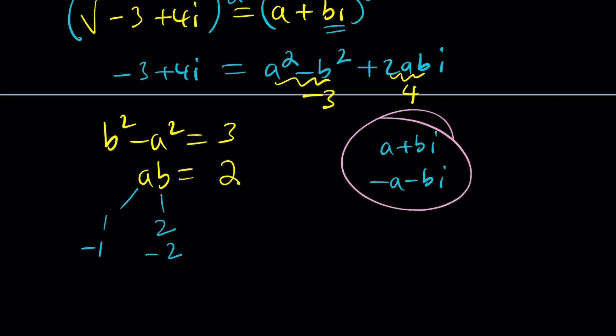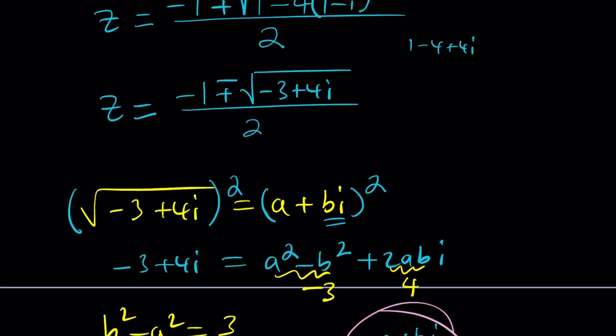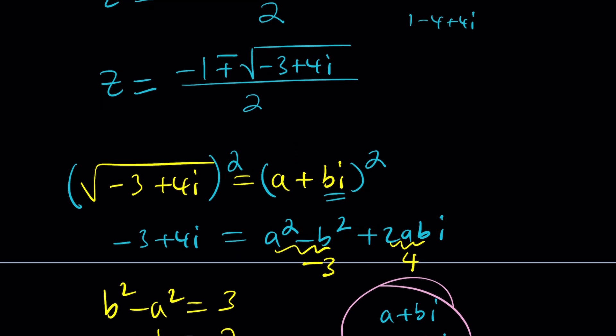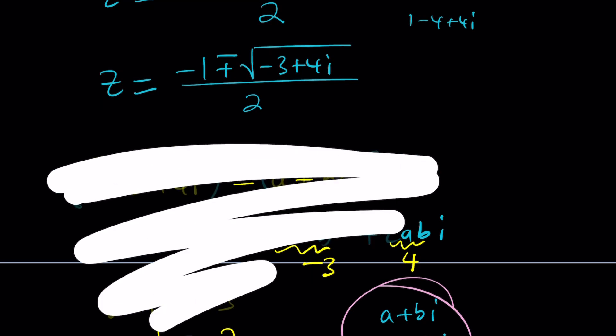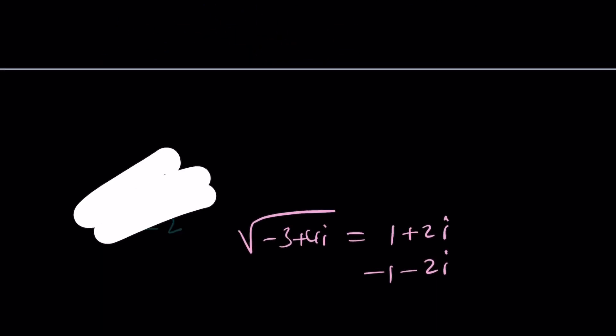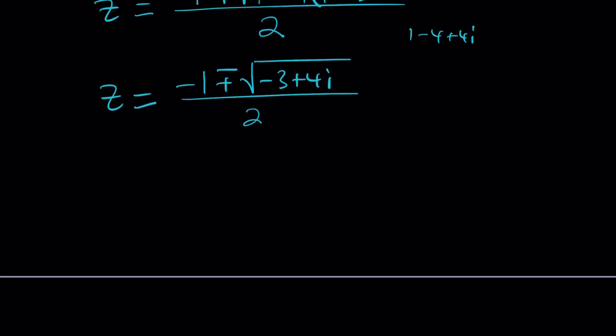So, we got the a, b values, therefore, the square root of negative 3 plus 4i is going to be 1 plus 2i or negative 1 minus 2i. Great. Let's go ahead and use both of these values, and then we're going to see what happens. Let's go ahead and clean up this area, and then I want to hold on to my square roots, of course, 1 plus 2i and the opposite of that.